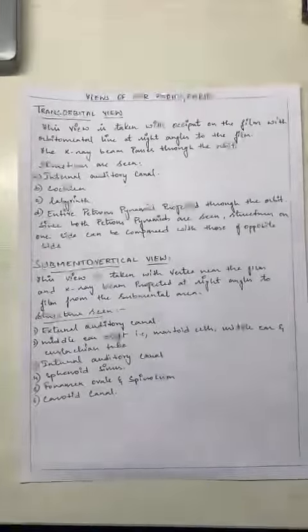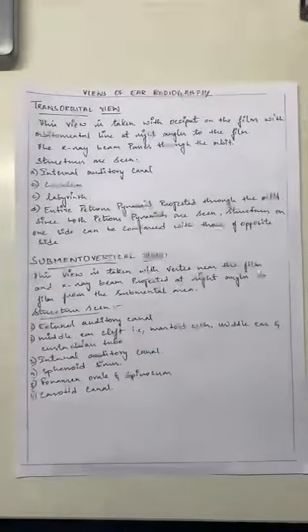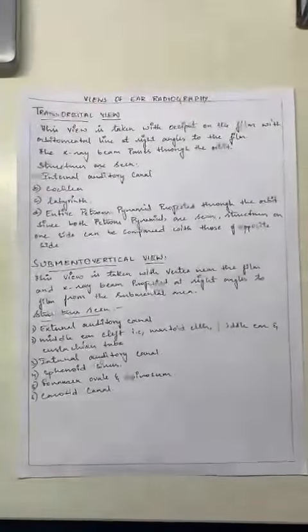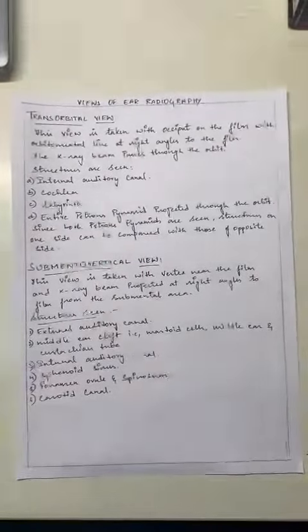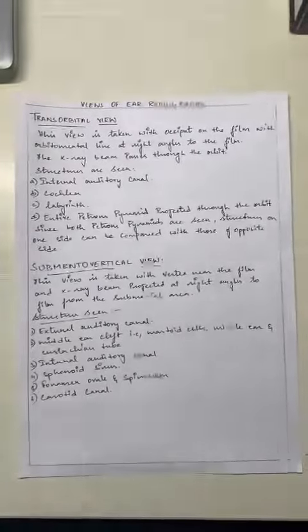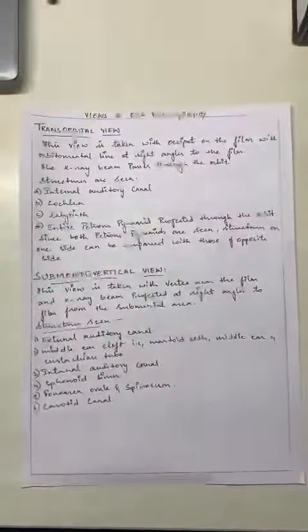This view is taken with the vertex near the film and the x-ray beam projected at right angles to the film from the submental area. Structures seen are: external auditory canal, middle ear cleft (that is, mastoid cells, middle ear, and eustachian tube), internal auditory canal, sphenoid sinus, foramen ovale and spinosum, and carotid canal. Thank you.